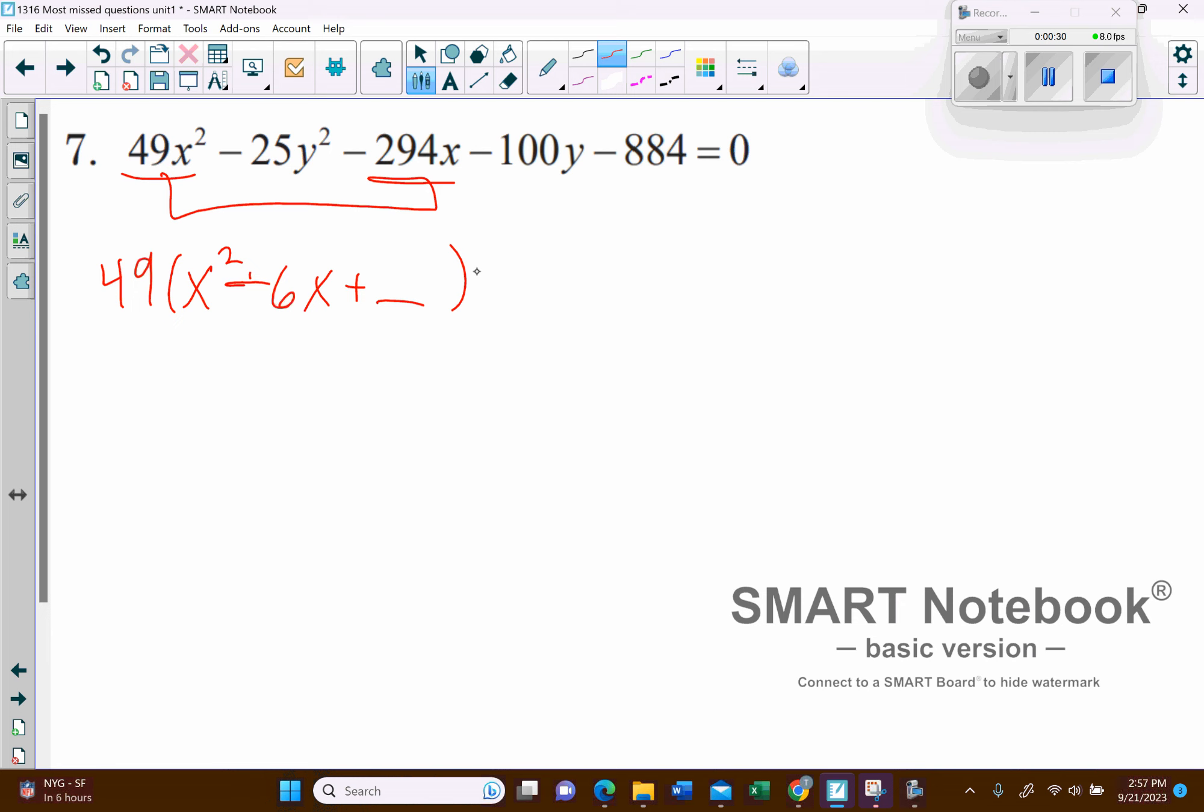And then here on the y's, this will be a little tricky, but we need to factor out a negative 25. And so that'll leave us with y squared, and then that's going to turn into a plus 4y right there, and then plus blank.